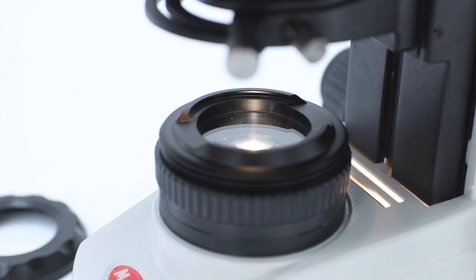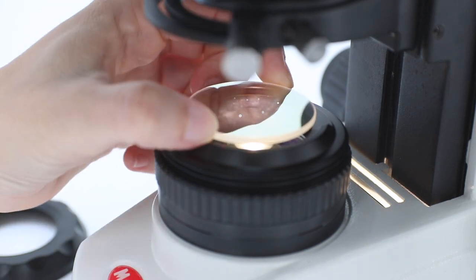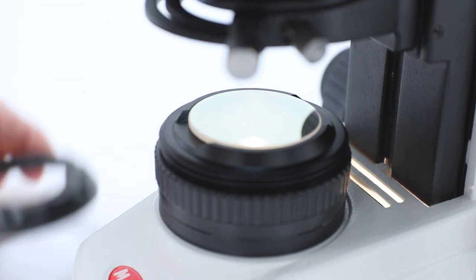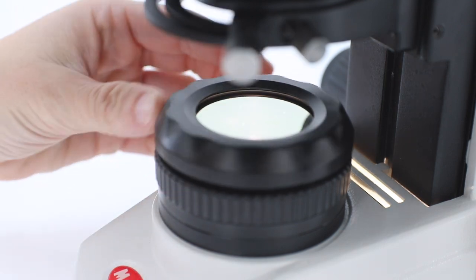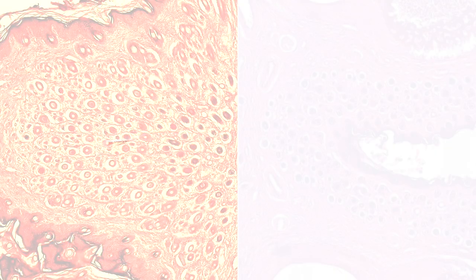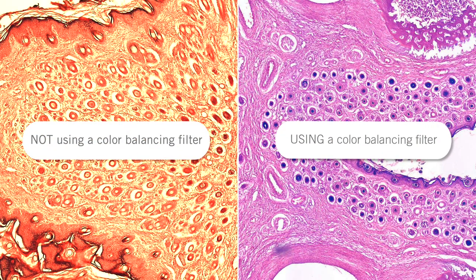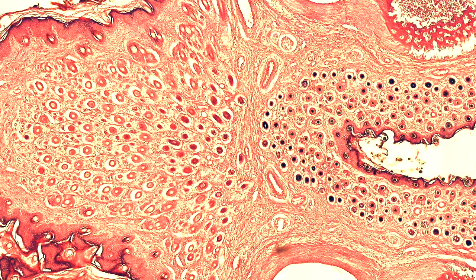This corrects the color temperature so that the yellow light projected from the tungsten or halogen bulb becomes white. Microscopes with LED illumination sources generally do not need this filter because the color temperature is already sufficiently high.